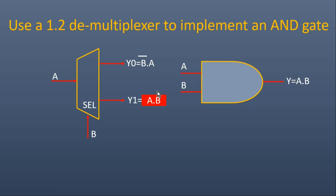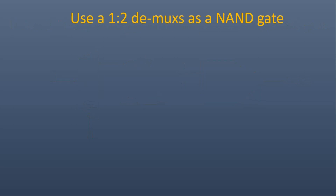Now let us move to the next question. The third question is on your screen where you have to use 1×2 demultiplexers to implement a NAND gate. This is the symbol of a NAND gate — it has two inputs A and B, and the output is A·B bar, that is the NOT of an AND gate. Those who know its answer please write it down in the comment section, otherwise I am going to tell you its answer.